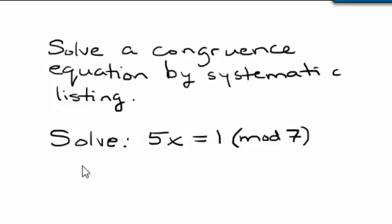We have a modular equation, 5x congruent to 1 mod 7. To get started, what we really need to understand is what this means, what equality or congruence in modular arithmetic means. So in order for the number 5x to be congruent to 1 in mod 7, that's the same thing as saying that 5x minus 1 is equal to 0 mod 7.